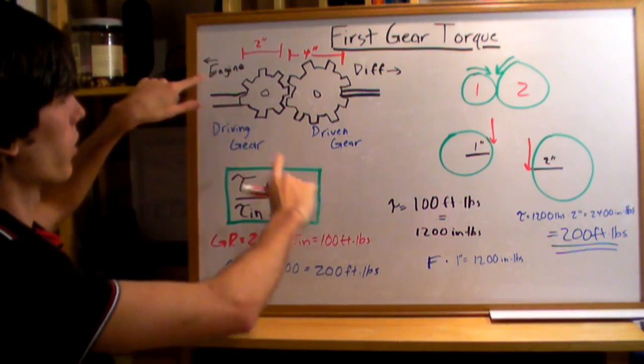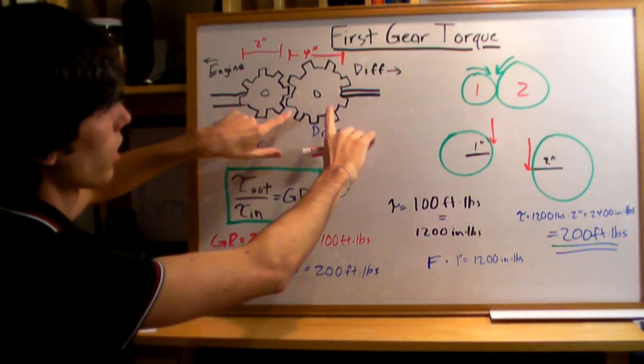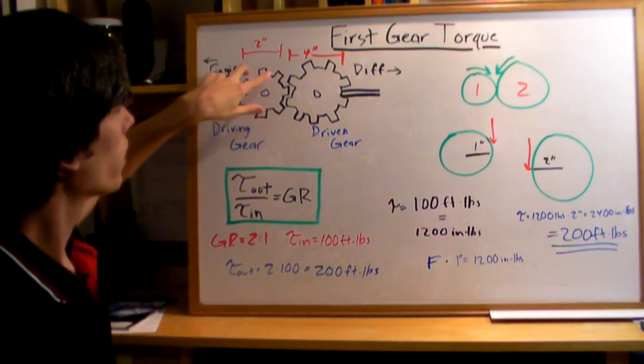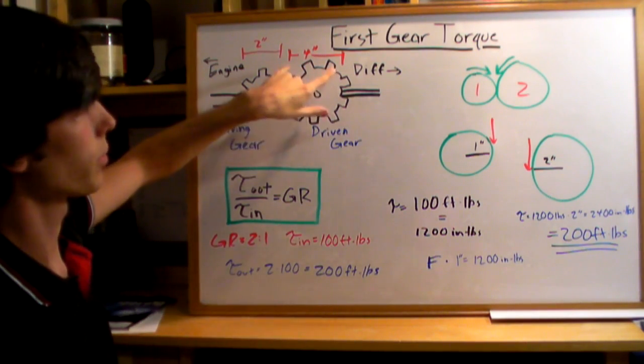Here's the setup we've got. We've got the engine connected to a gear in the transmission which is connected to a larger gear going to the differential. The engine gear is going to be 2 inches and the gear going toward the differential is going to be 4 inches.